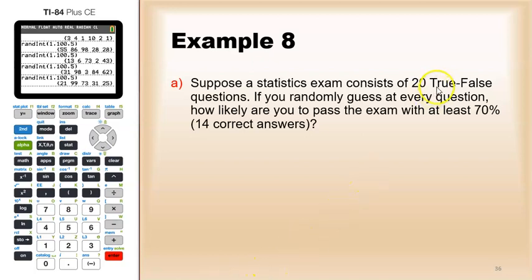So if you're randomly guessing at a true-false question, that means the probability of success will be 50 percent, one out of two. The sample size is 20 questions, and we want at least 70 percent or at least 14.